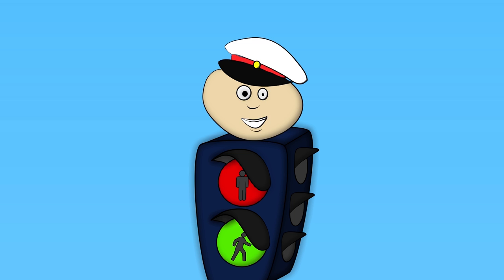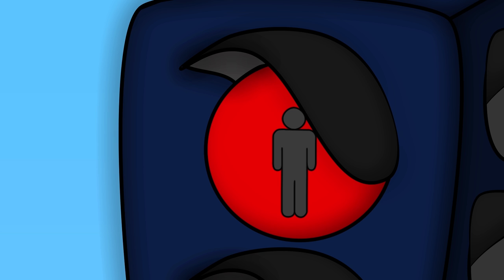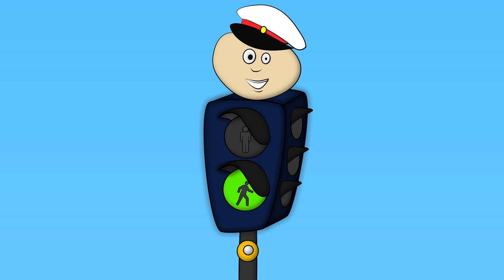The traffic light is of two kinds. One kind is for pedestrians. The red signal with the image of a standing man tells us to stop and wait. The green signal with the image of a walking little man allows movement — when it's on, you can go safely.